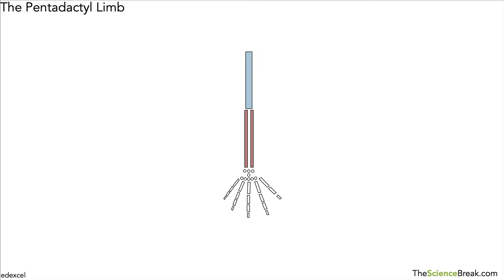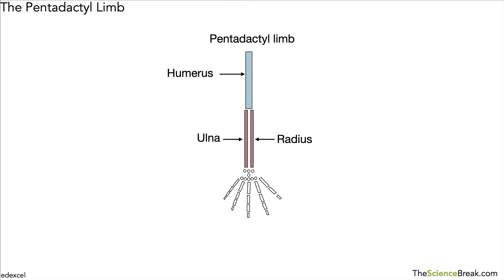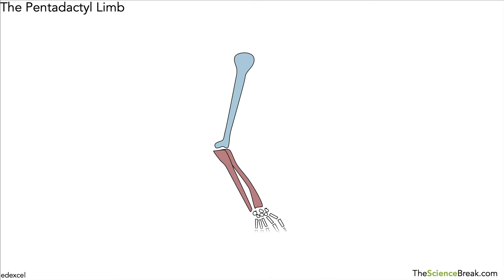This is based on the idea of what we call the pentadactyl limb. In the pentadactyl limb we have a set of bones. This one here, if you were to look at humans, would perhaps be the humerus. On this side is the radius and here is the ulna, and right at the end beyond the wrist bones we have five digits — in humans, that's five fingers.